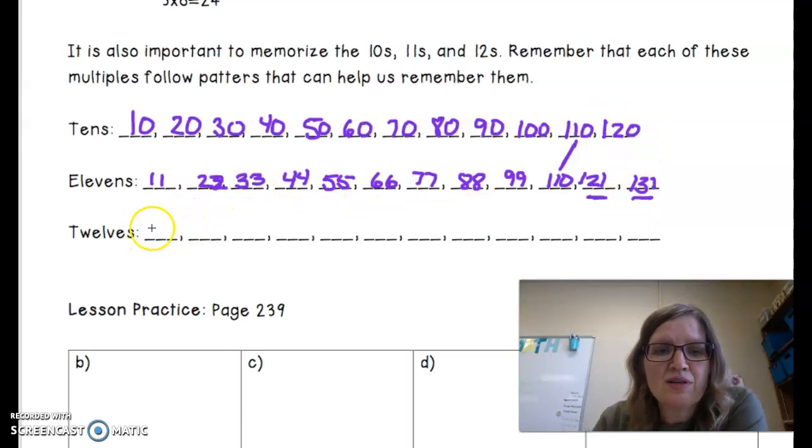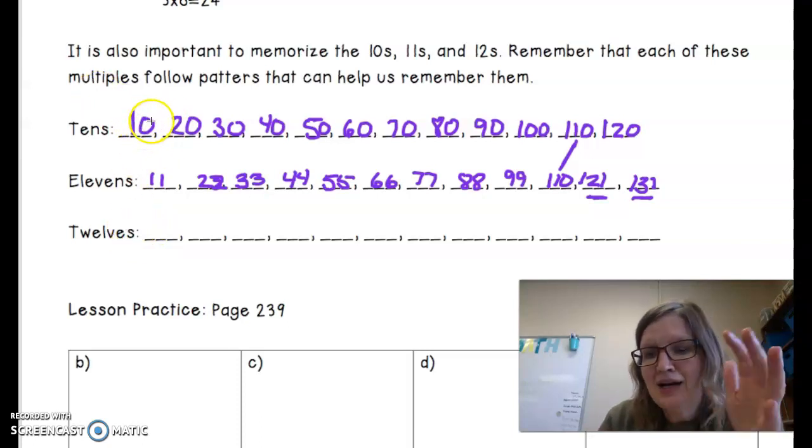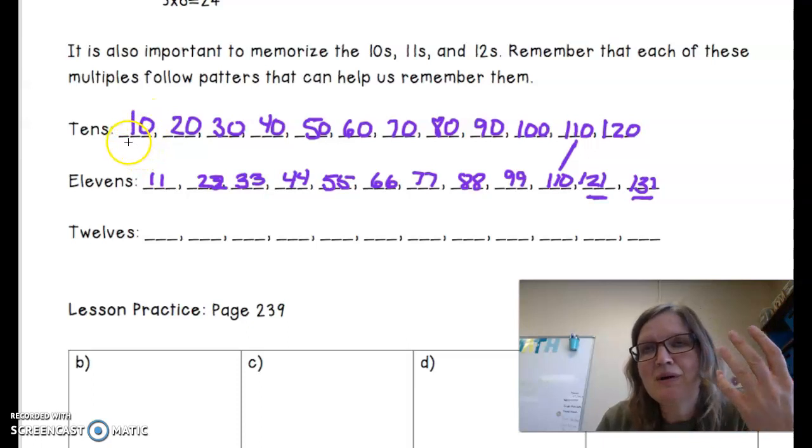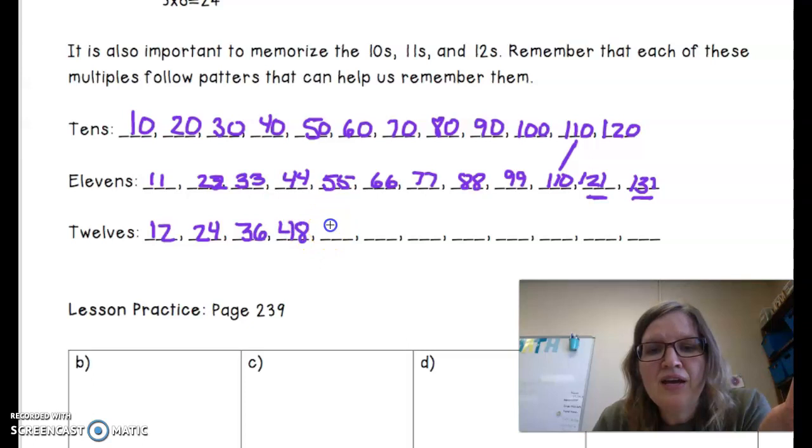Finally, 12s. I just think of 10 times 10, and then I add the number that's multiplied by 2. So I'll show you. I say 12 times 1 is 12. 12 times 2 is 24. 12 times 3 is 36. 12 times 4 is 48. 12 times 5 is 60. 12 times 6 is 72.